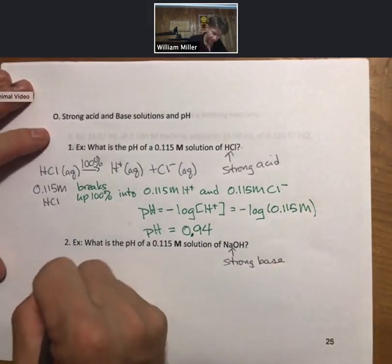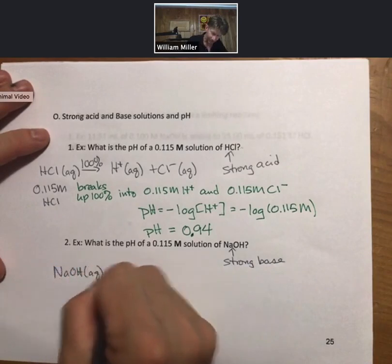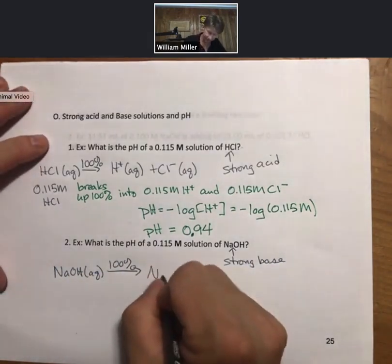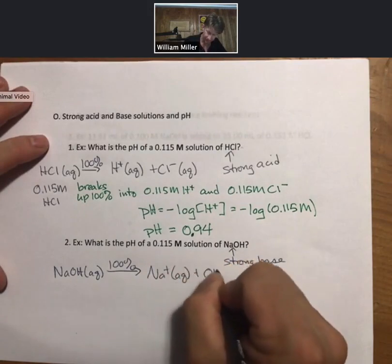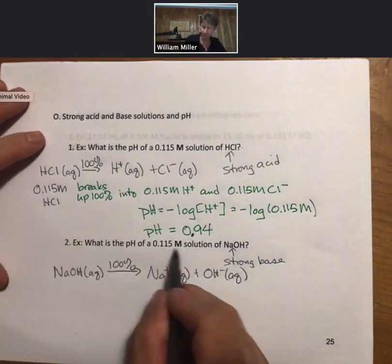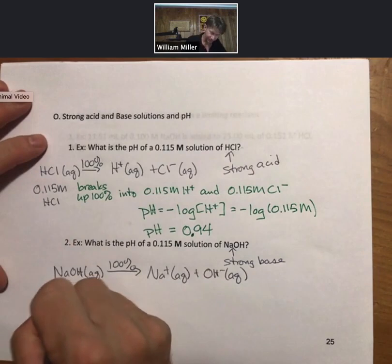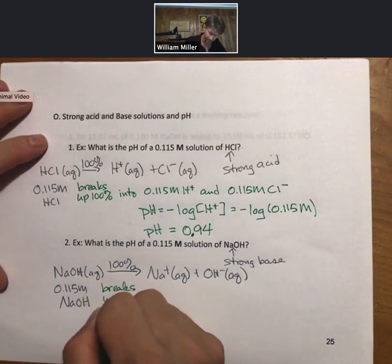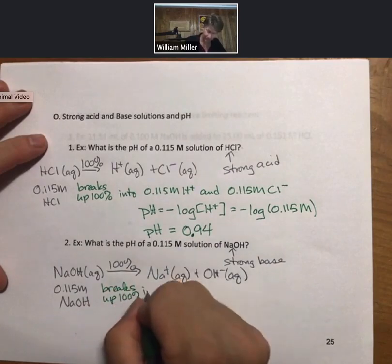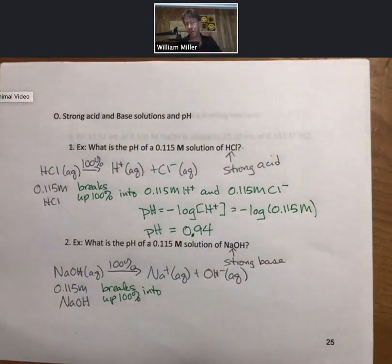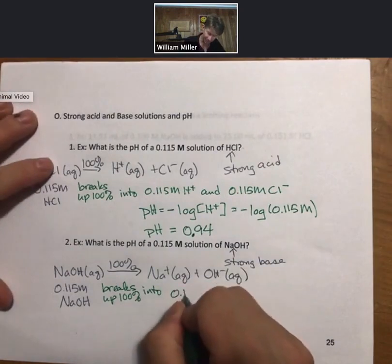We can do the same thing. It breaks up 100% into sodium ions and hydroxide ions. Which means that if the bottle says 0.115 molar sodium hydroxide, it breaks up 100% into the sodium ions. And it's true, like before with the chloride ions, we don't care right now about the sodium ions, but we will at some point.